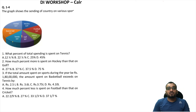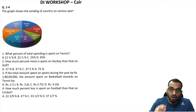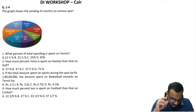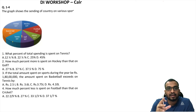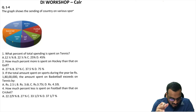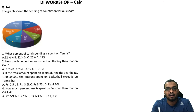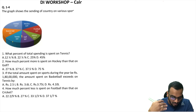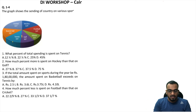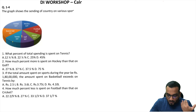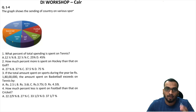Hi guys, this is one of the most important data interpretation topics which appears every year for most exams: Maharashtra CET, Bank PO, SNAP, CMAT, NMAT, MAT, ACMA. This is one of the most important data interpretation types. Now, you can see on the screen that this is a pie chart, but it is a little different.